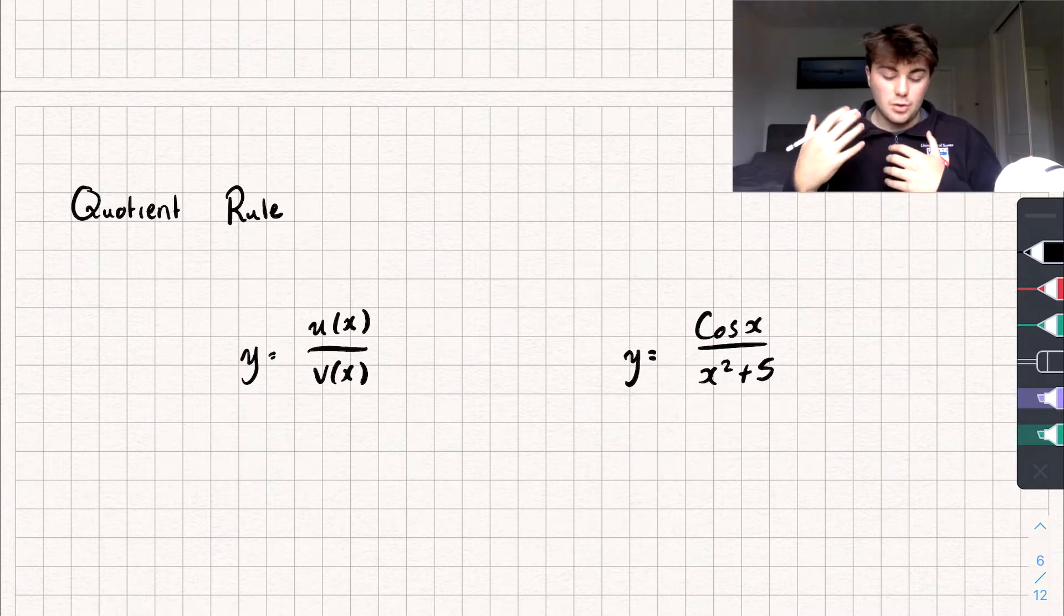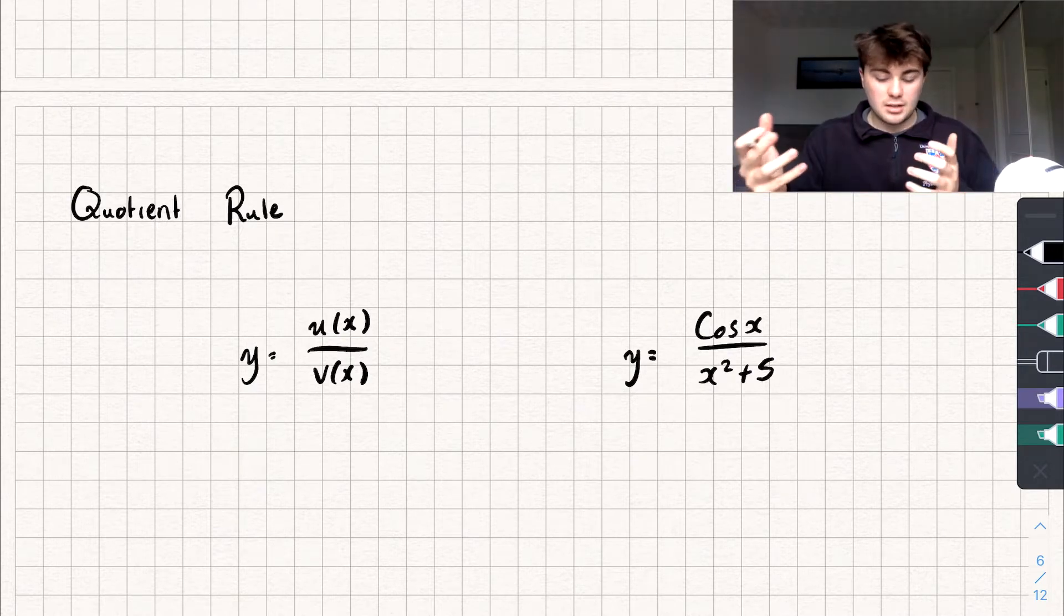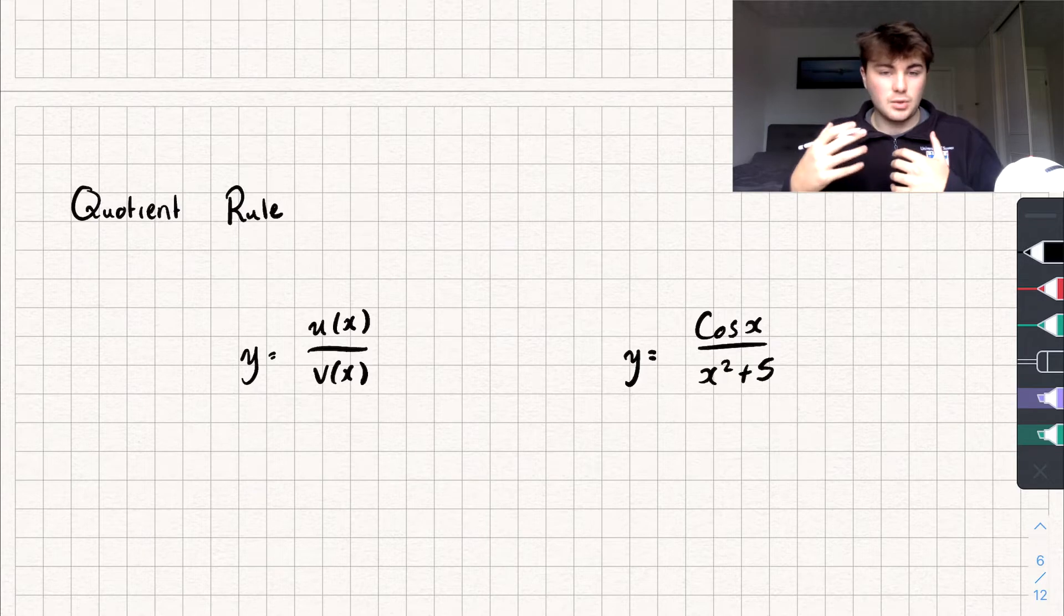So in that example, our u(x) or function u would be cos x and our function v would be x squared plus 5. So it's actually quite easy.